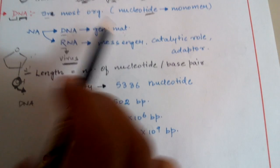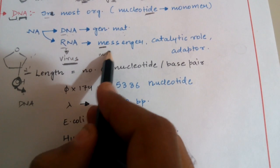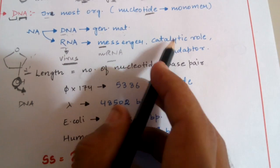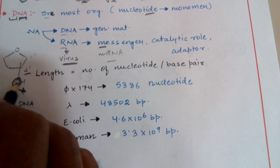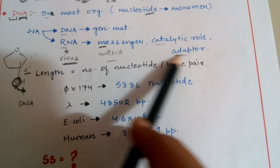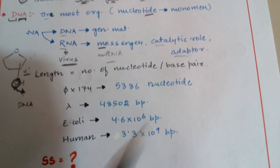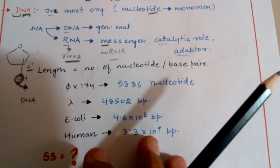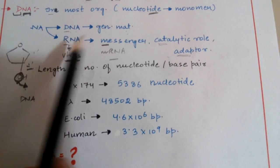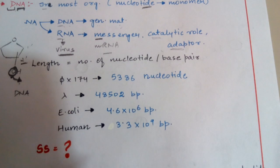DNA is genetic material in most organisms, and RNA is genetic material in some viruses. DNA mostly acts as genetic material, but RNA has multiple functions. It acts as messenger — as in mRNA. It has a catalytic role due to the presence of the 2-prime oxygen, making it reactive. It is also an adapter molecule, which you will study in transcription. So RNA functions as messenger, catalyst, and adapter.